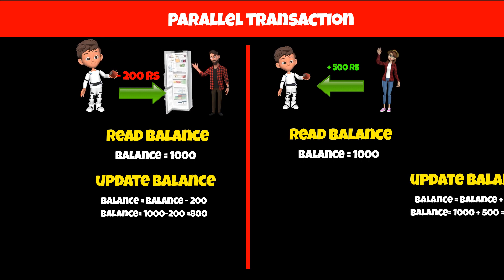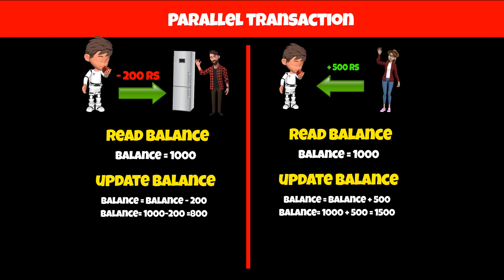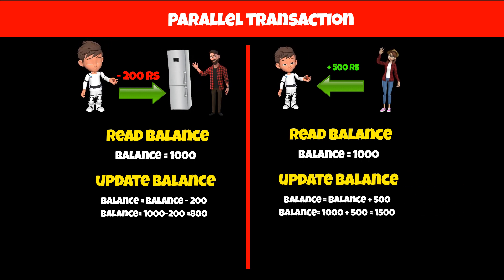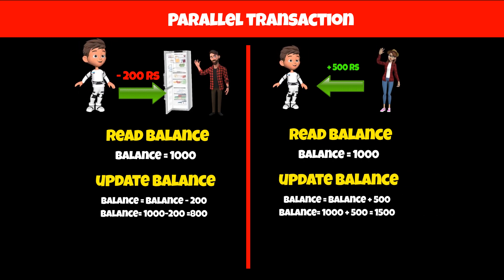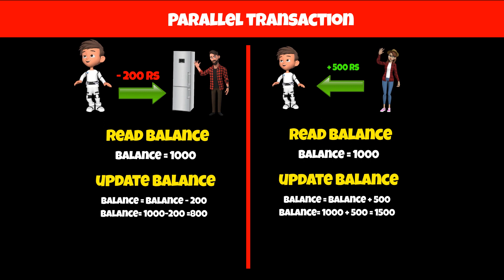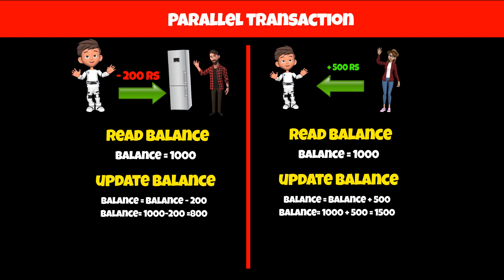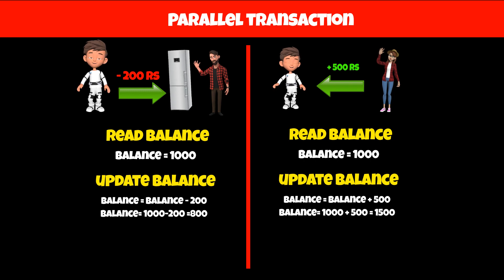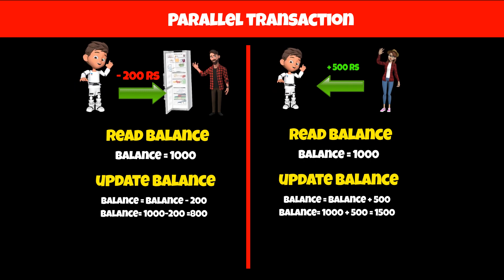In the second transaction, Rachel paid 500 rupees to Ross, so we will add 500 rupees to the current balance. The new balance in the second transaction will be 1500. Here you can see that the current balance variable has two different values for two different transactions.